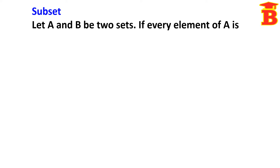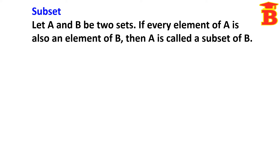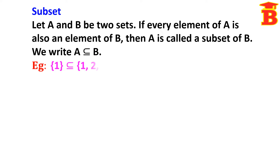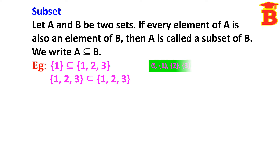Next, subset. Let A and B be two sets. If every element of A is also an element of B, then A is called a subset of B, written as A ⊆ B. For example, {1} is a subset of {1, 2, 3}, and also {1, 2, 3} is a subset of {1, 2, 3} itself. Note that the subsets of {1, 2, 3} are: null set, {1}, {2}, {3}, {1,2}, {1,3}, {2,3}, and {1, 2, 3}.